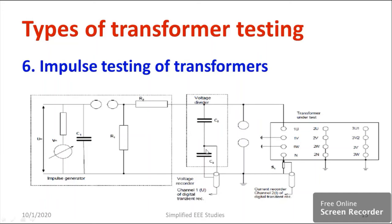A capacitive type voltage divider is especially used to measure impulse waveforms. A recording facility is also available. The output of the voltage divider is applied across the transformer winding, where different types of transformer winding with insulation are kept. We are not directly using the insulation — we will be using the equivalent circuit of the suitable winding. So it is not a direct test.